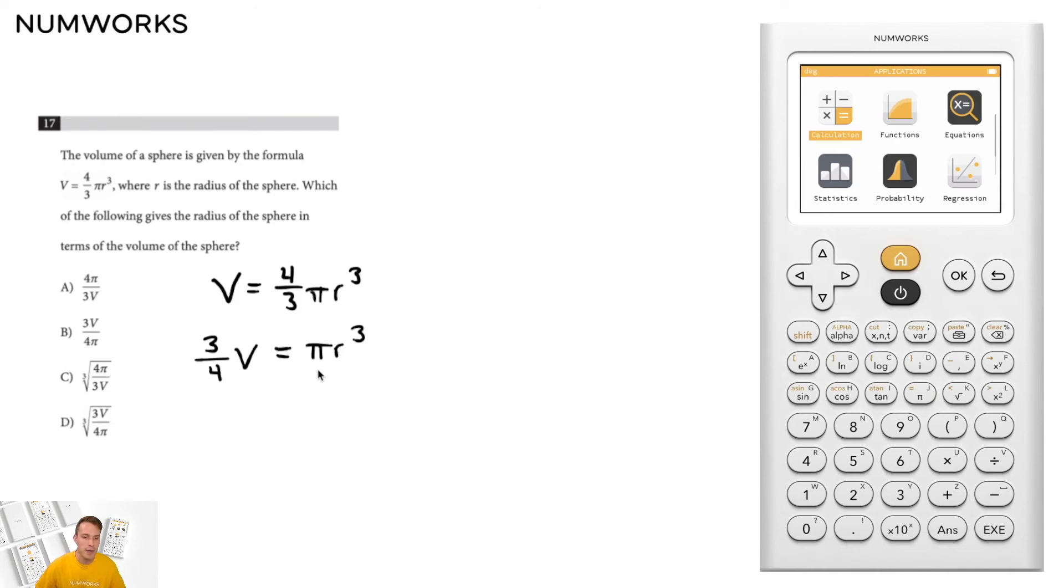Next let's divide both sides by pi. Simplifying the left side gives us three times the volume over four pi, and on the right side, r cubed.